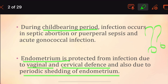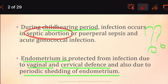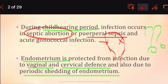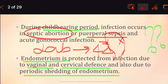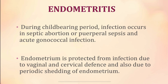During the childbearing period, infection occurs in septic abortion, puerperal sepsis, and acute gonococcal infection. During septic abortion, there will be rupture of membranes, and because of this, infection and inflammation of the endometrium can occur. Puerperal sepsis is inflammation of the endometrium occurring any time between labor and 42 days after delivery. Gonococcal infections also cause endometritis.